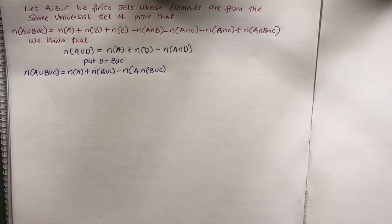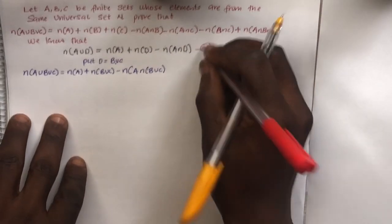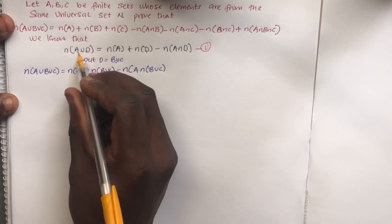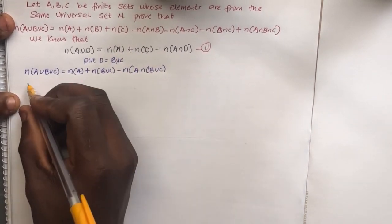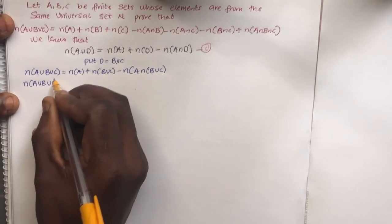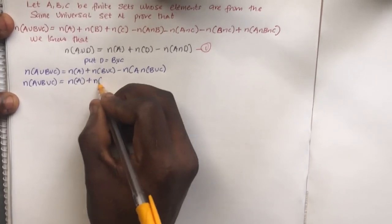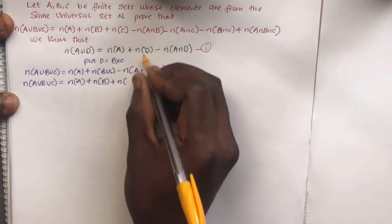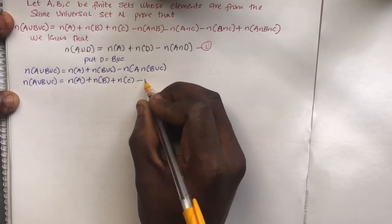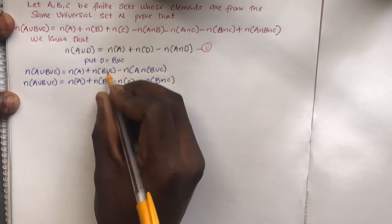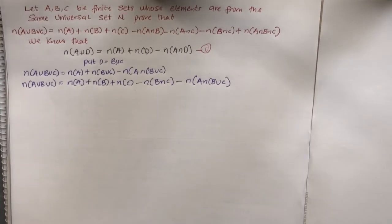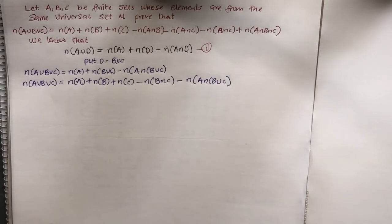This equals cardinality of A plus cardinality of (B union C) minus cardinality of A intersection (B union C). I'll call this Equation 1. Now, looking at Equation 1, whenever I have the union of two sets I can expand it. So cardinality of B union C equals cardinality of B plus cardinality of C minus cardinality of B intersection C. Then I subtract the cardinality of A intersection (B union C).